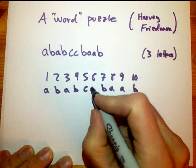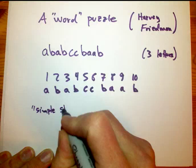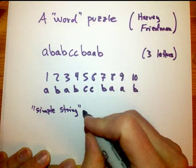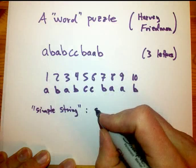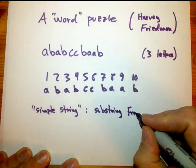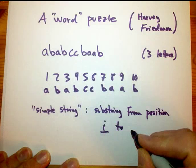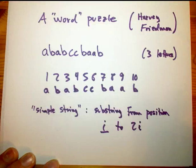I'm going to define a couple of notions. A simple string is any substring of this whole thing in order consecutively from position i to position 2i for any integer i, 1, 2, 3, 4. For example, to make that clear, examples of simple strings here would be the 1 and 2 positions, so AB.